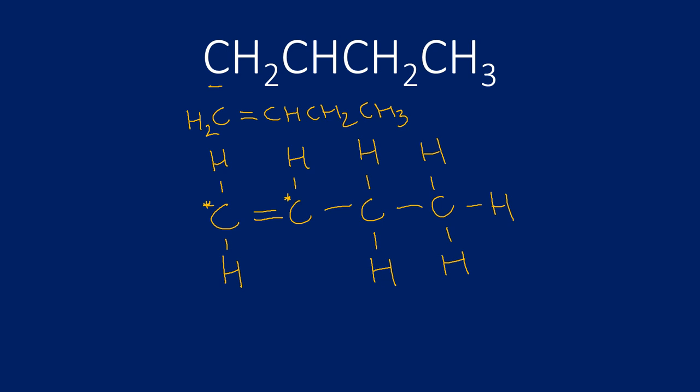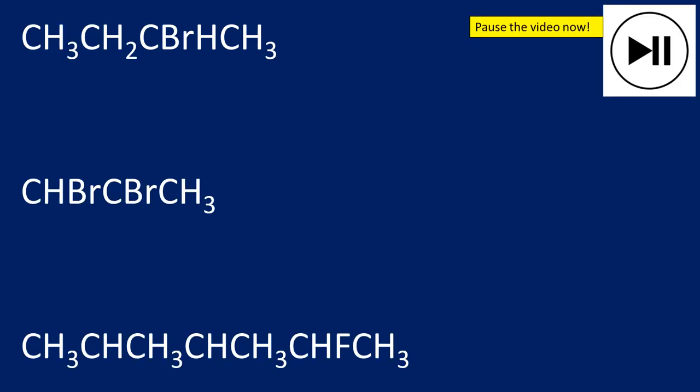I suggest you pause the video and have a go drawing the displayed formula for these three. We've got a CH3 group at the beginning, then a CH2 group, then a C with a Br and an H. It doesn't matter if I put the Br at the top or bottom, and then at the end we've got a CH3 group.